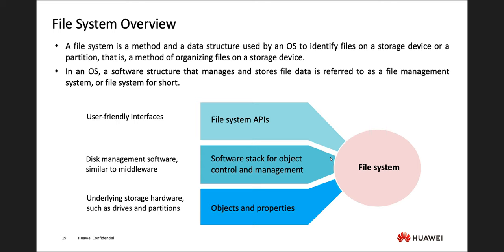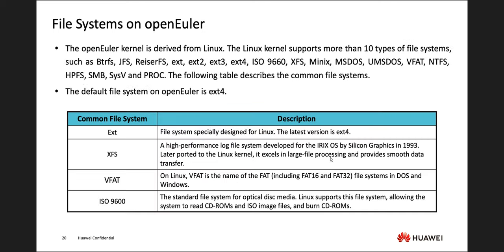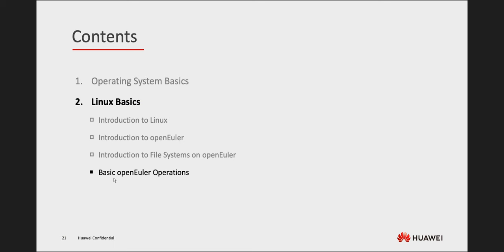Linux also uses APIs as a system between the hardware and software. It has different file systems — in Windows you have NTFS, but Linux has several. The most common is EXT, designed for Linux, with EXT4 being the latest version. There's also VFAT, which is an older format but allows you to read Windows files — so you would format a partition as VFAT to read those files in Linux.